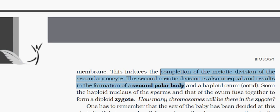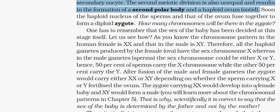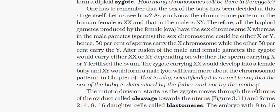The gender of the zygote is determined by the presence of X or Y chromosomes. The zygote further divides and develops into a baby before childbirth. If the zygote carries XX chromosomes, it develops into a female baby; if it carries XY chromosomes, it develops into a male baby.